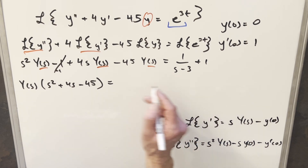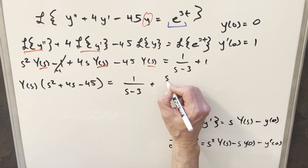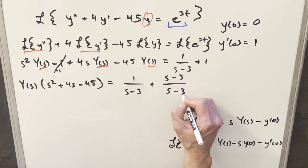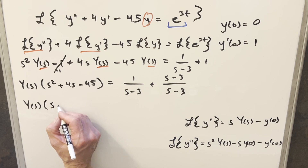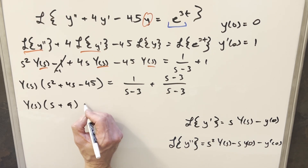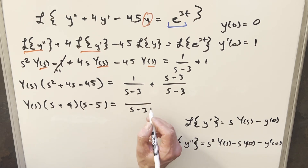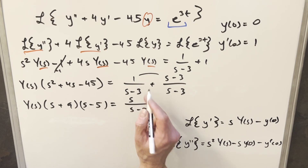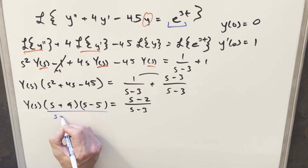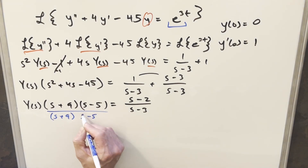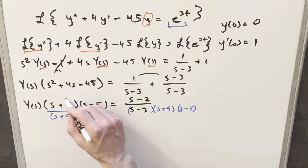When I rewrite this, I'll get a common denominator. So I'll write the right side as 1 over s minus 3, and for the 1 I'll write it as s minus 3 over s minus 3. Now I can factor the quadratic on the left as s plus 9 times s minus 5. The common denominator on the right gives numerator s minus 2. Then dividing both sides by s plus 9 times s minus 5 cancels everything on the left.